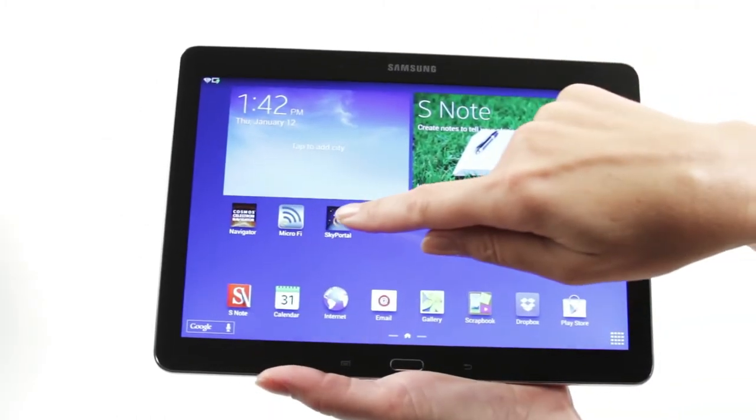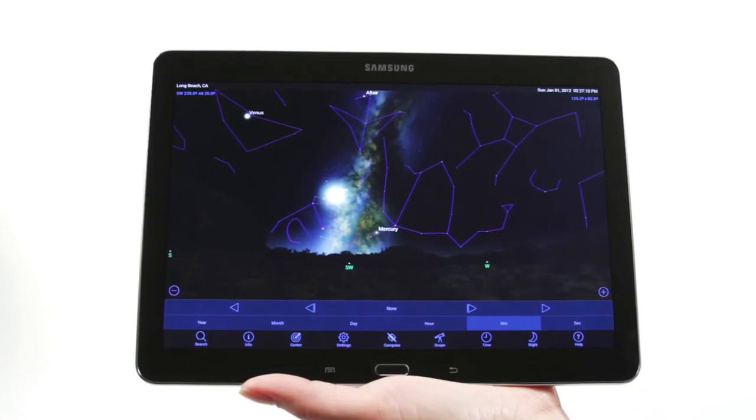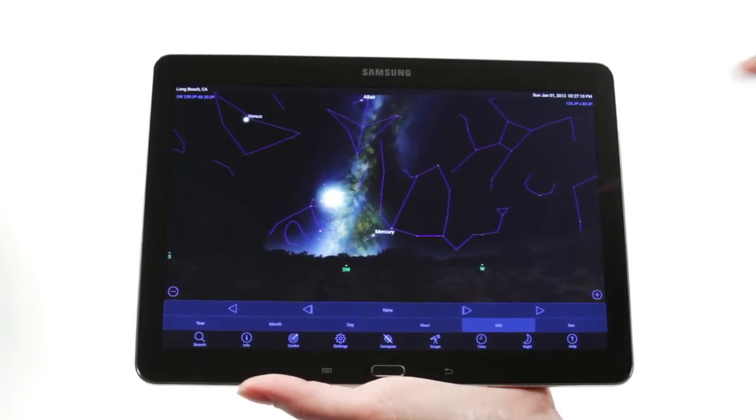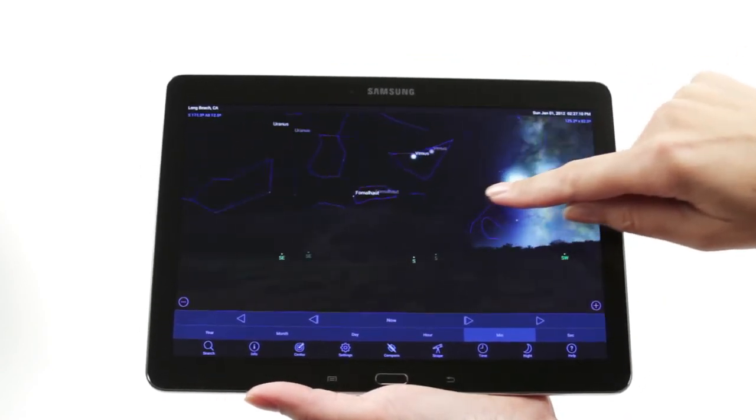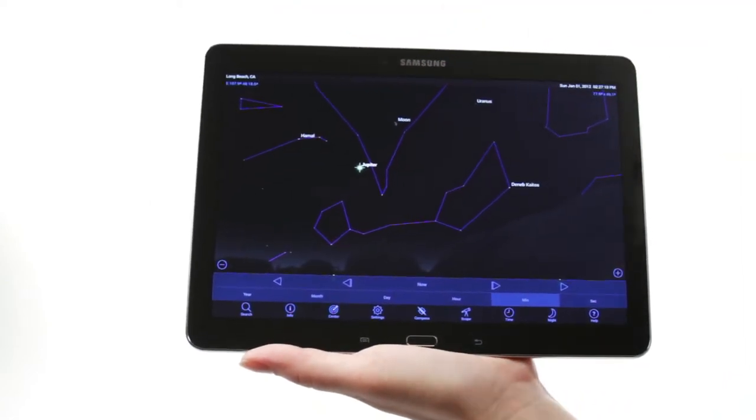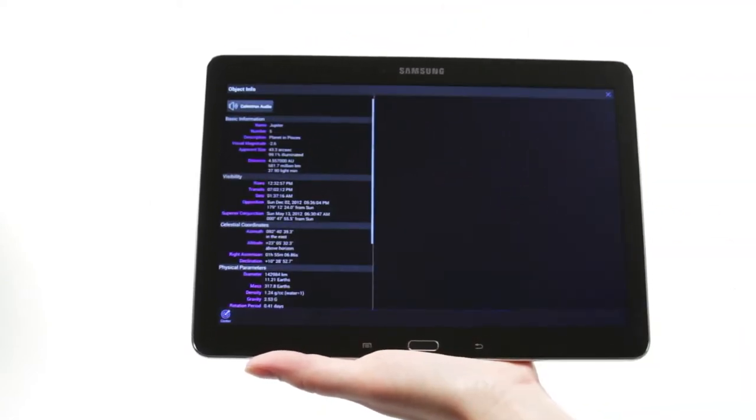When you're out under the stars, use Celestron's free SkyPortal mobile app for iOS and Android to locate objects in the night sky. As you observe, listen to SkyPortal's audio descriptions for the most popular objects.